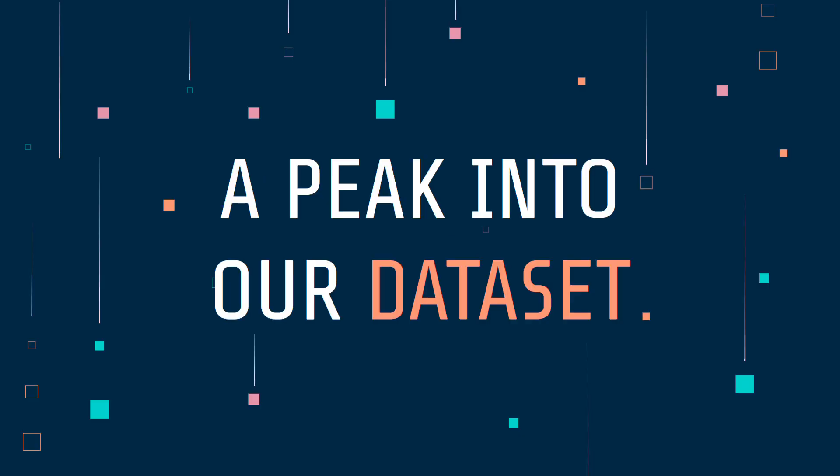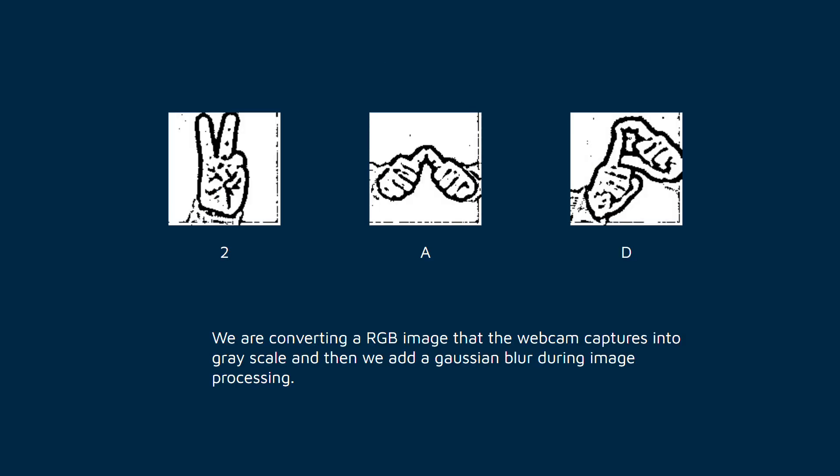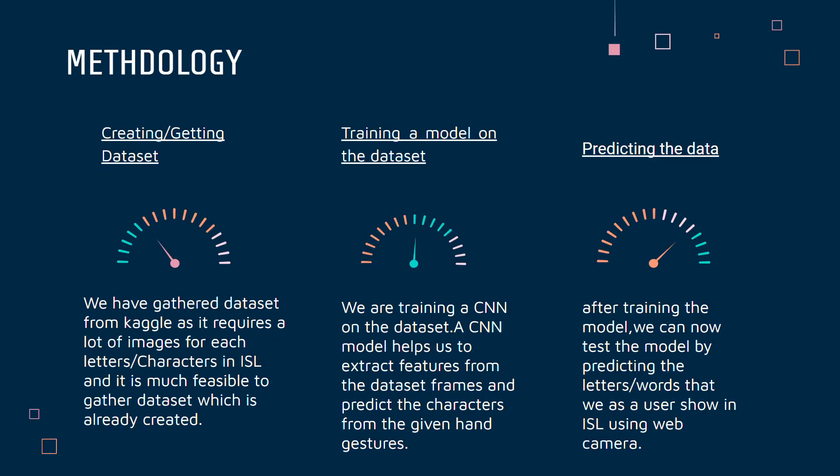Let's have a peek into our dataset, because it's important to understand how our model works. This is exactly how our dataset looks. We are converting an RGB image captured by a webcam into grayscale, and then we are adding a Gaussian blur during image processing.